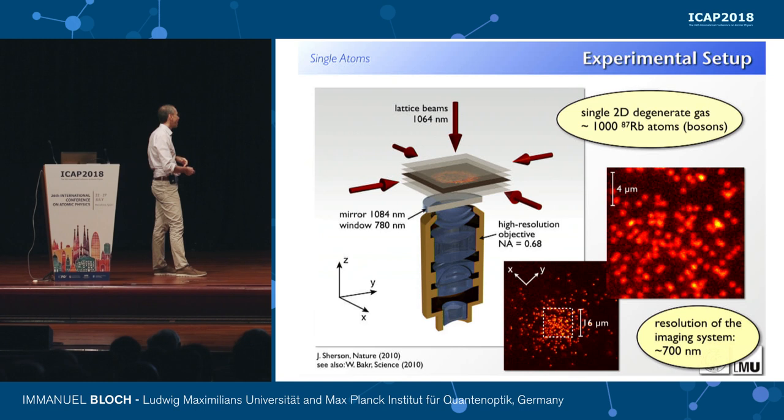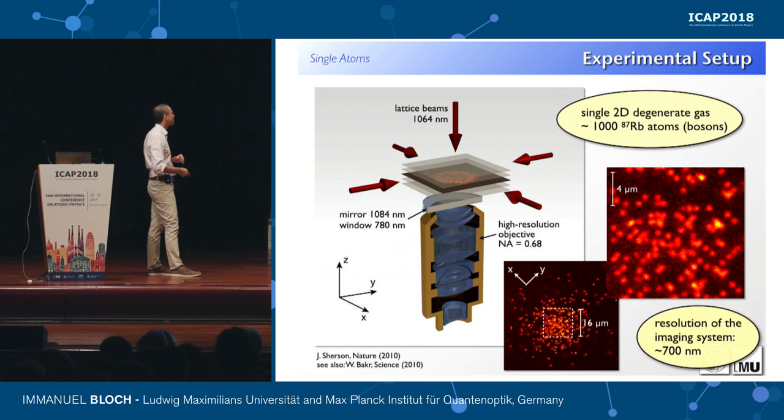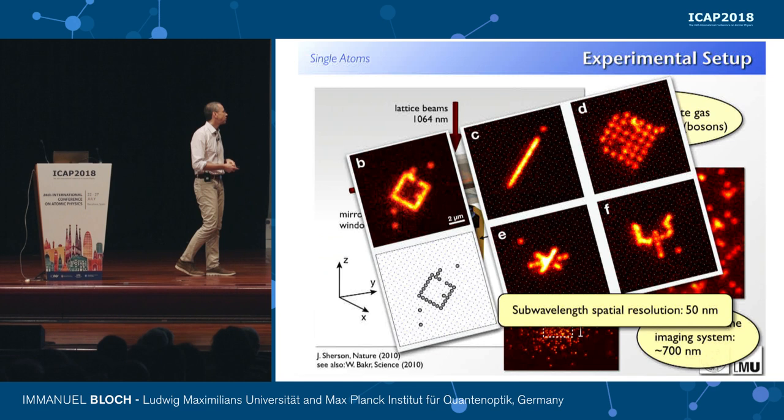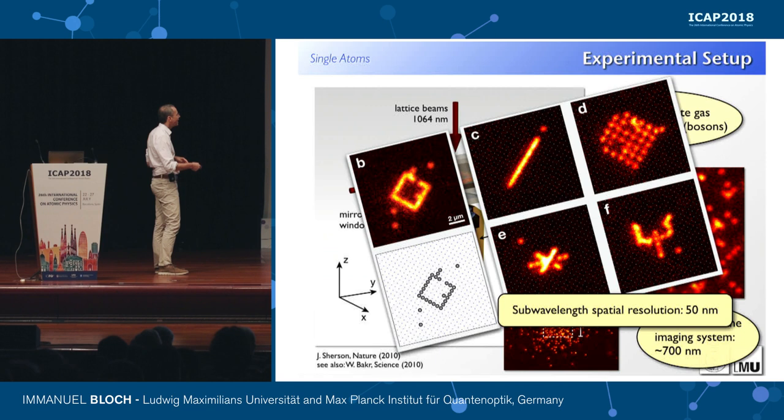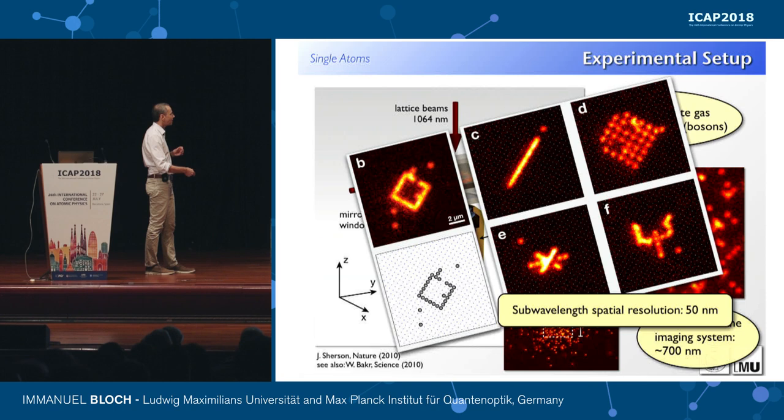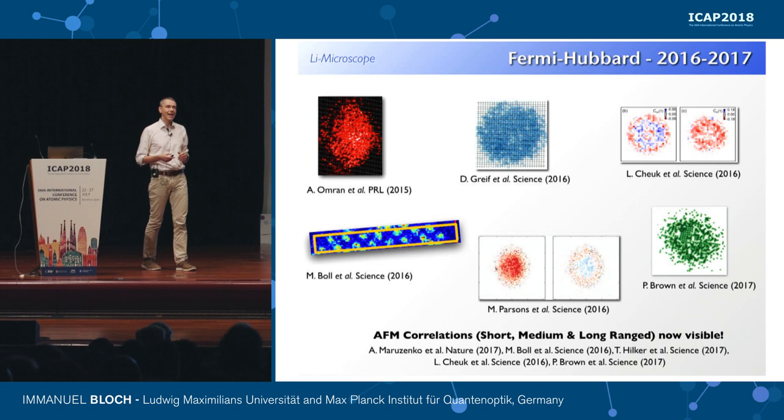This is how it works in practice for our first bosonic quantum gas microscopes in Munich, where you see individual atoms lighting up in the microscope in the 2D plane. We can also manipulate atoms one by one and prepare almost any kind of initial state pattern with better resolution than the lattice separation — down to 50 nanometer spatial resolution.